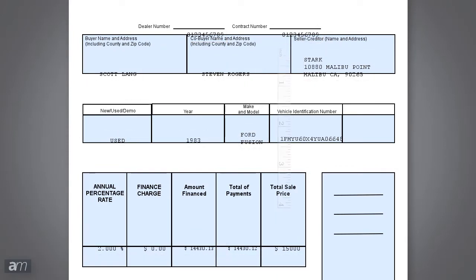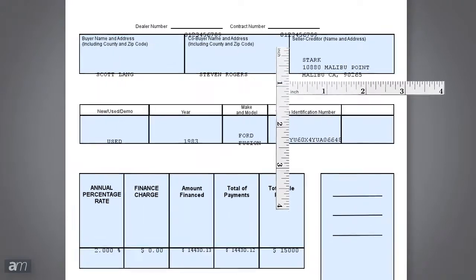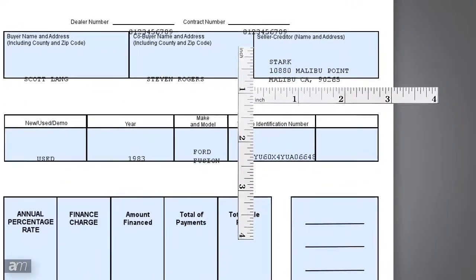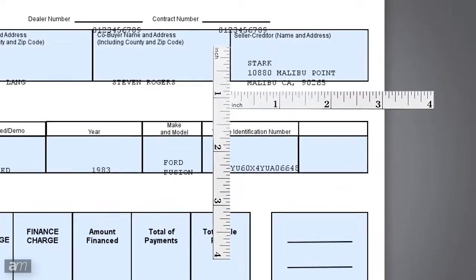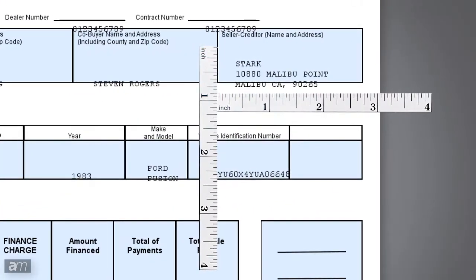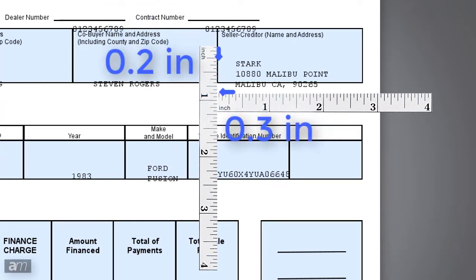Take a ruler and measure in inches the distance and direction between where the text is printing and the field where the text should be. For example, the text is printing 0.2 inches too low and 0.3 inches too far to the right.